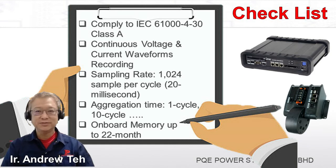For a correct and accurate power quality voltage dip study, we need a power quality analyzer with 6 major features. Feature 1: the analyzer must fully comply with IEC 61430 Class A. Feature 2: it must be able to continuously record three phases of voltage and current waveforms throughout the power quality recording period, up to 22 months, to ensure no missing event recording. Feature 3: it must come with a sampling rate of 1024 samples per cycle — i.e., 1024 samples logged within 20 milliseconds for 50 Hz supply frequency — throughout the recording period up to 22 months, to capture detailed power quality events.